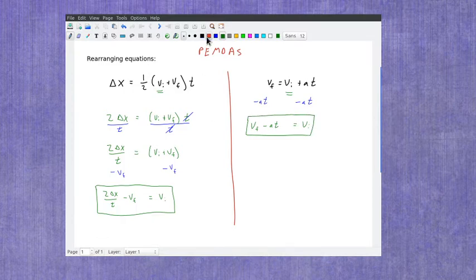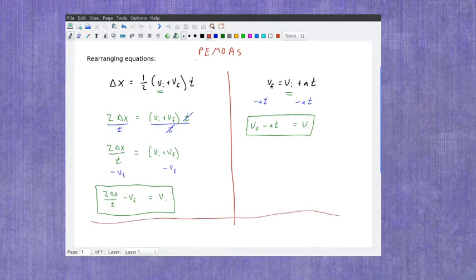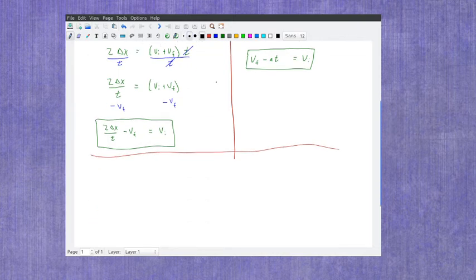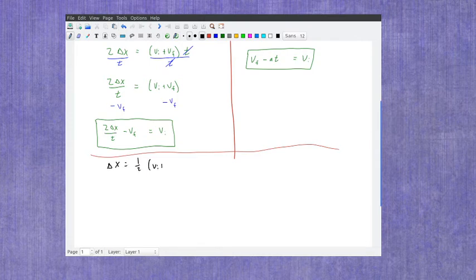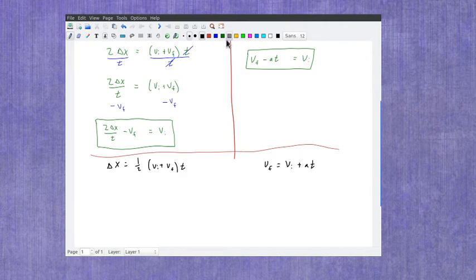So let's look at these same two equations now but look at a different example. Let's say in both of these equations I wanted to solve for the time. Now I'm going to go ahead and recopy them just so we can keep track a little easier. Here I've got my delta X is one half VI plus VF T. And here I had my VF equals VI plus AT. And now I want to rearrange these equations as if I was solving for the time.